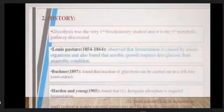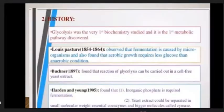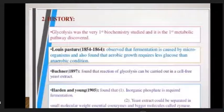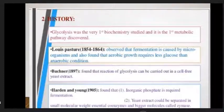History of glycolysis. Glycolysis was the first biochemistry studied and is the first metabolic pathway discovered. Louis Pasteur observed that fermentation is caused by microorganisms and found that aerobic growth requires less glucose than anaerobic conditions. Buchner found that the reactions of glycolysis can be carried out in a cell-free yeast extract. Harden and Young found that inorganic phosphate is required for fermentation. Yeast extract could be separated into a small molecular weight essential coenzyme and a bigger molecule. Glycolysis was tested with yeast.